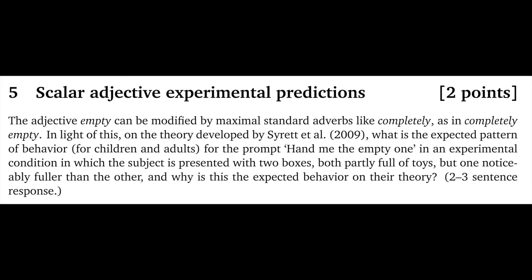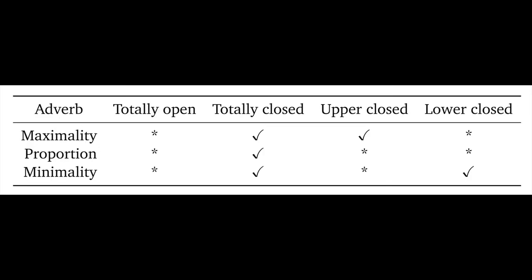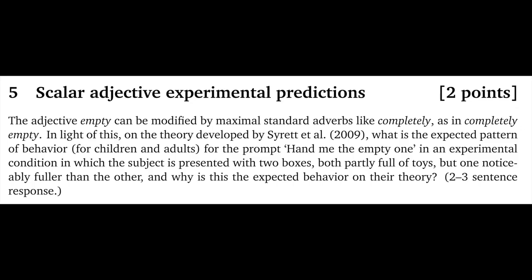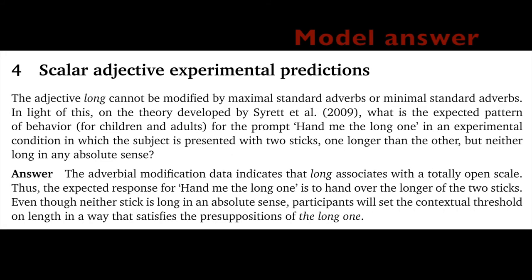I think this is straightforward. The first sentence of the question is telling you what you need to know about the scale structure given the adverb-adjective modification framework that we discussed in class. That classification lets you connect with Syrett et al.'s theory and in turn with their experimental predictions. Second, this is about what they would expect, not what they found — you don't need to relate this to what they did observe. For a model answer, I did essentially this question for an adjective that can't be modified by maximal or minimal standard adjectives, and my answer is just three sentences.